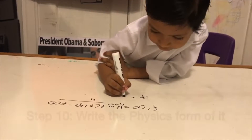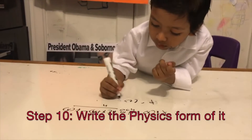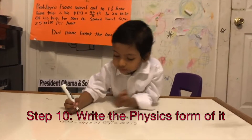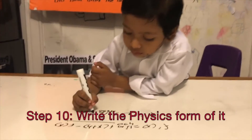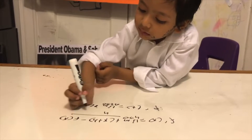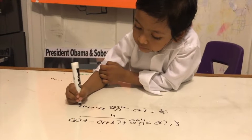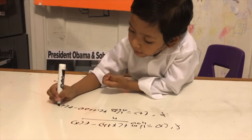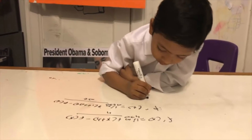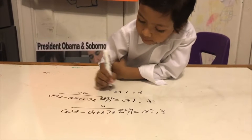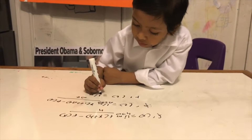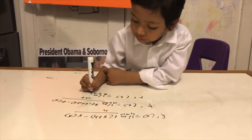p prime of t is equal to the limit as delta t goes to zero of p of t plus delta t minus p of t, over delta t. So p prime of t is equal to — redistributing — 40 over 3t squared, limit as delta t goes to zero.